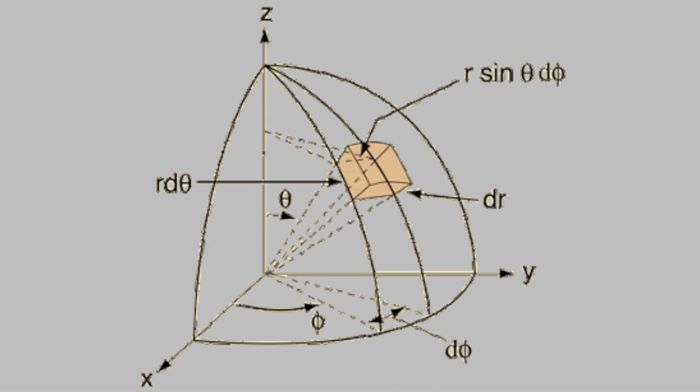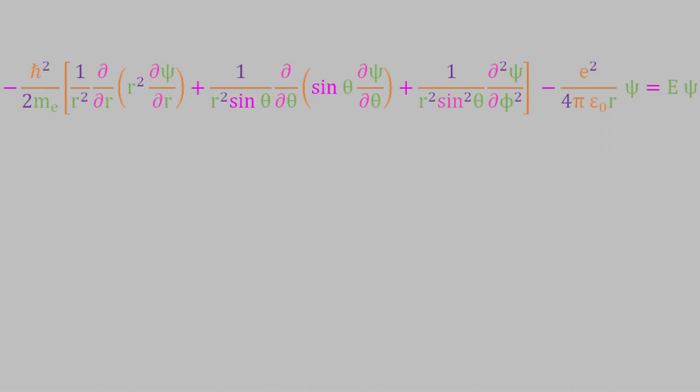When we change the Schrödinger equation from Cartesian to spherical coordinates, here's what we get. This looks pretty horrible. It's definitely much more complicated than the equation we had in Cartesian coordinates, and it would be kind of a nightmare if we had to keep the equation in this form. But luckily, we can simplify it into a much easier expression.